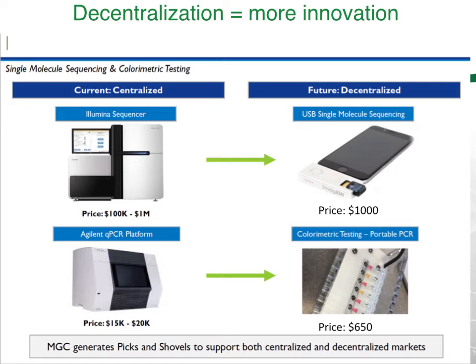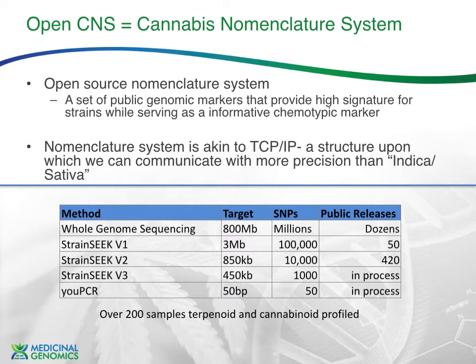When we say applications, we mean primers, reagents, and intellectual property regarding what targets to amplify that are predictive for better agricultural genomics and cannabis grow performance in general. To do this, you usually need some standard set. The internet needed TCP/IP to take off; Bitcoin needs everyone running the same code agreeing on SHA-256 algorithms and elliptic curve cryptography. All of these are agreed upon by everyone who runs the Bitcoin network. So sometimes markets need to lay down some rails in order to decentralize — and we're laying down those rails.